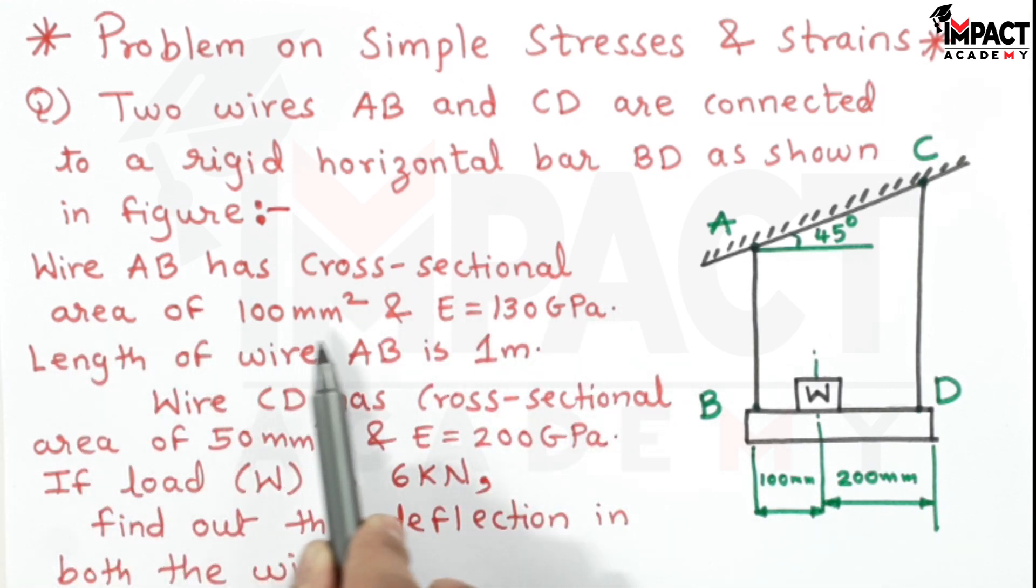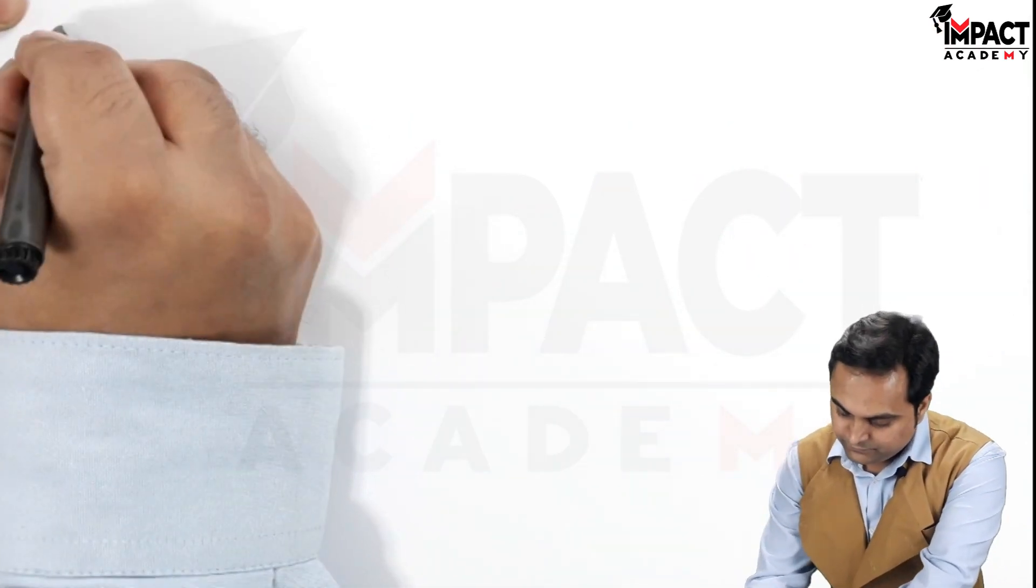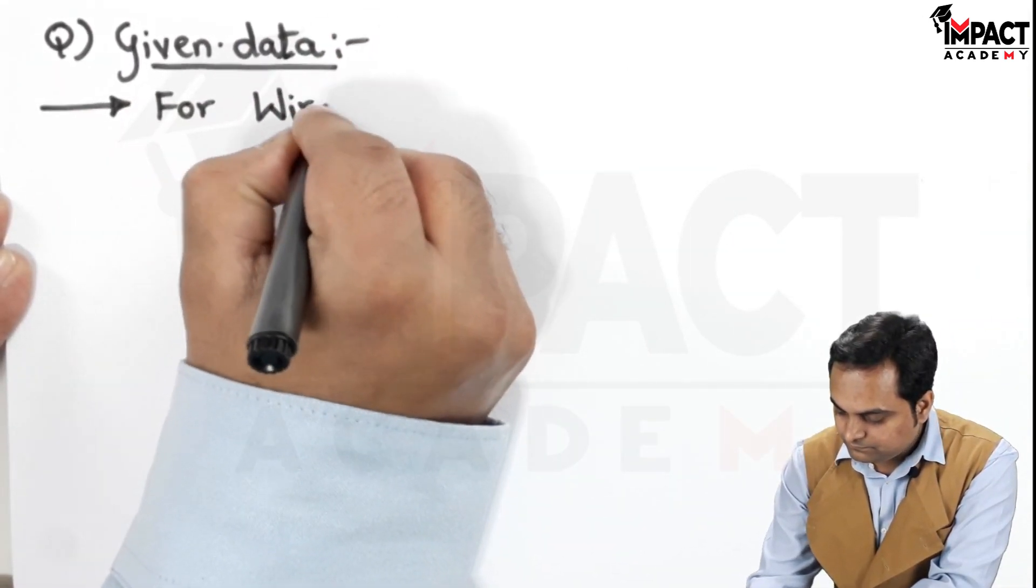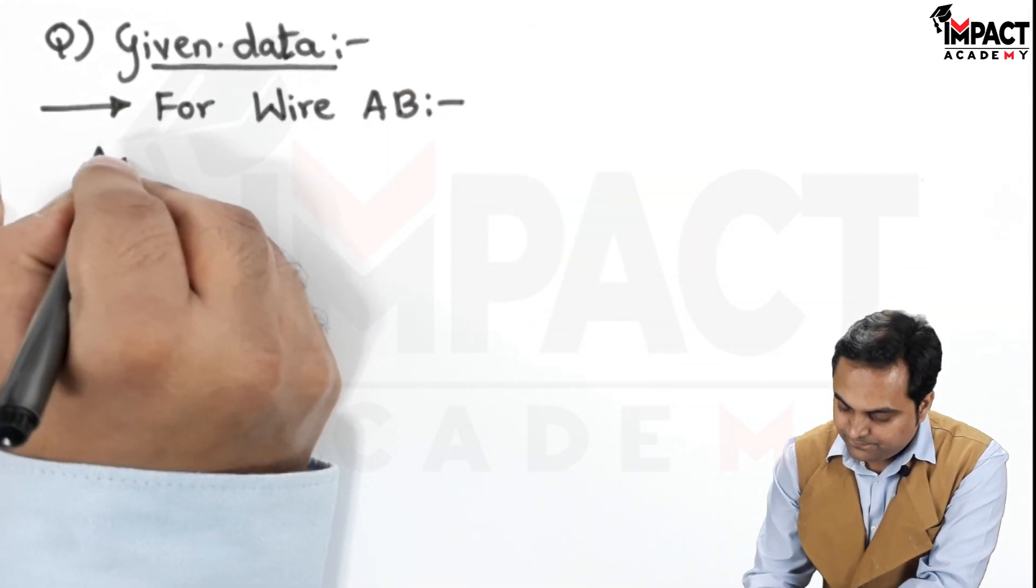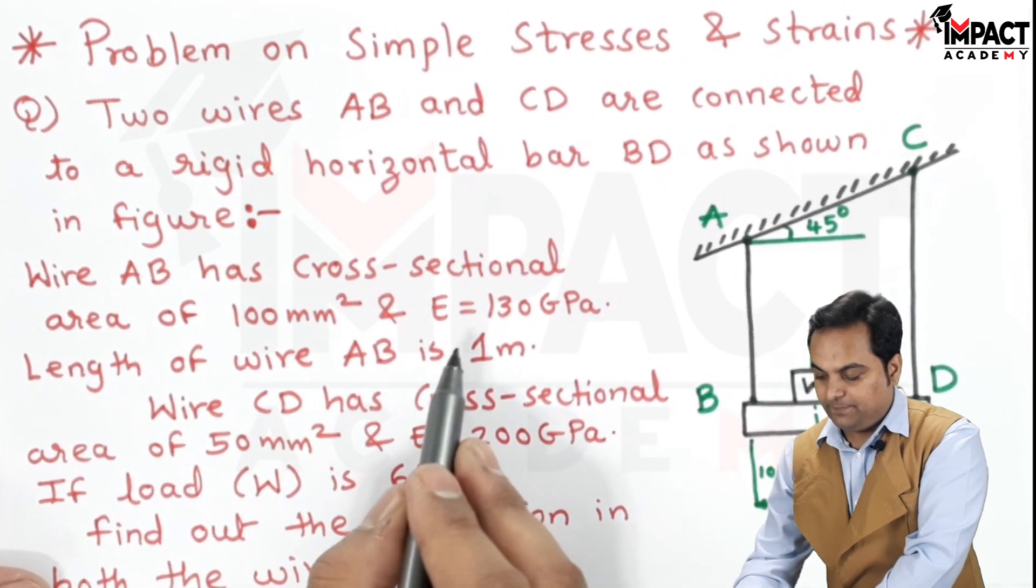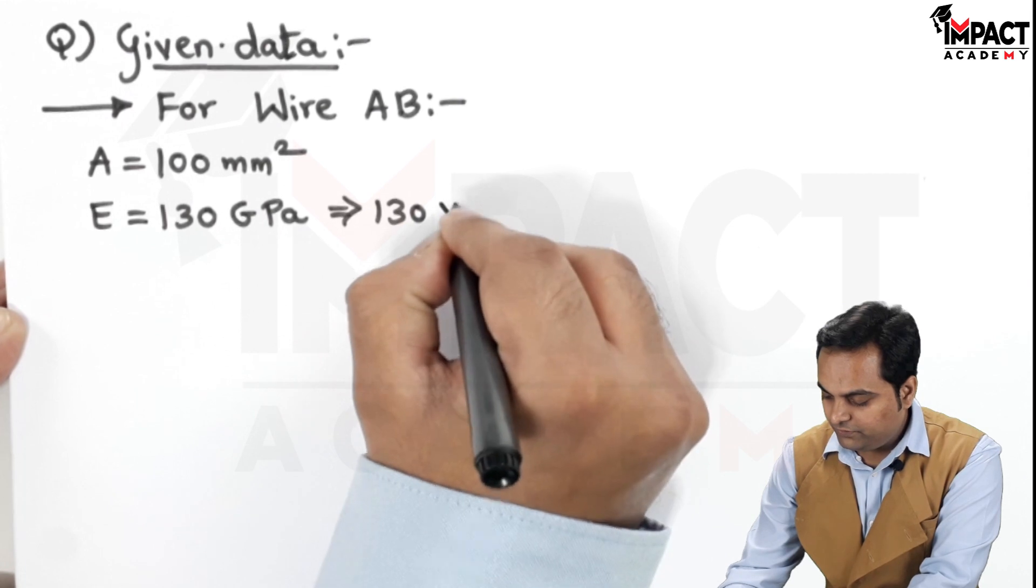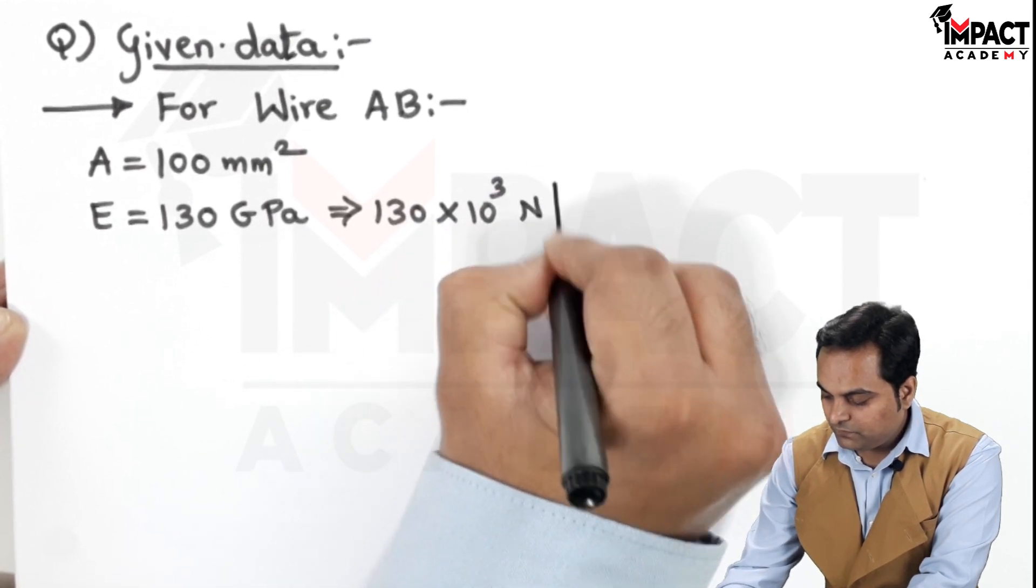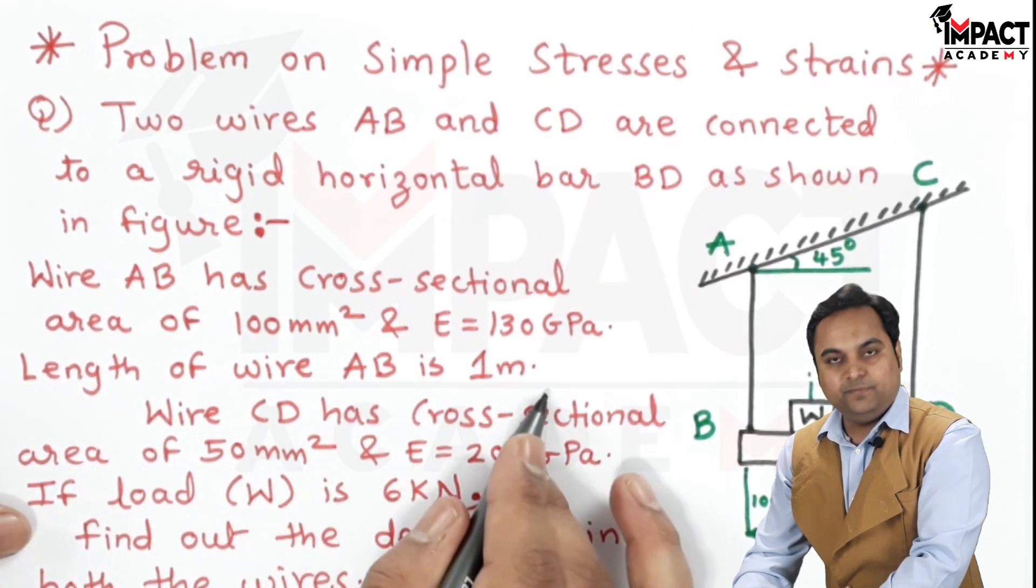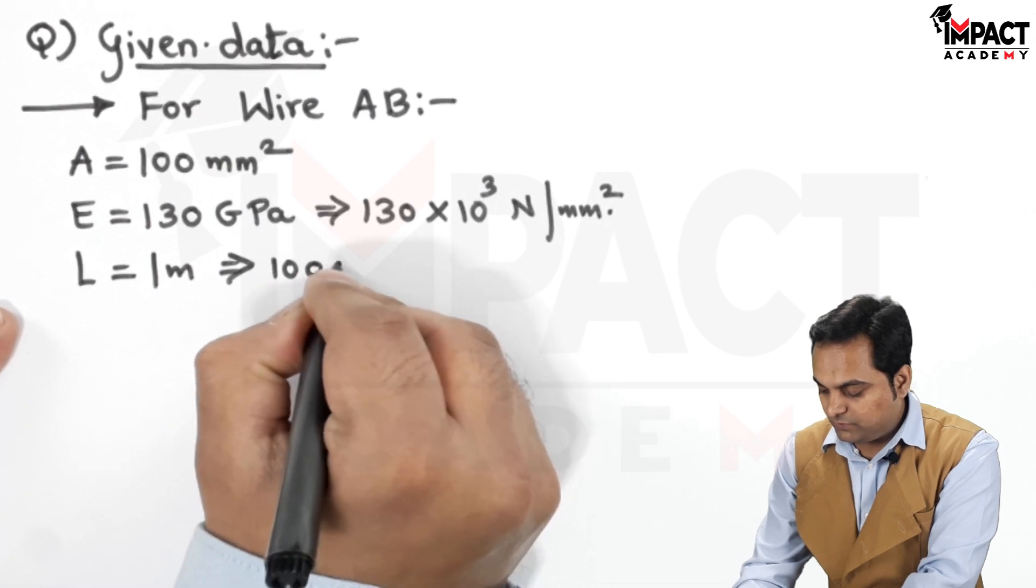Wire AB has cross-sectional area of 100 mm square. I will write this in the form of data. For wire AB, the cross-sectional area is given 100 mm square. And capital E, that is the Young's modulus, 130 GPa. So it is 130 into 10 raise to 3 N per mm square.